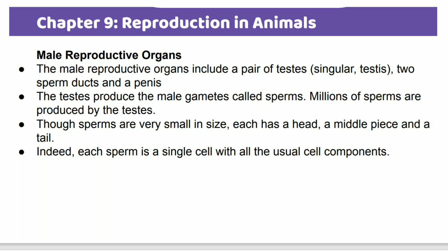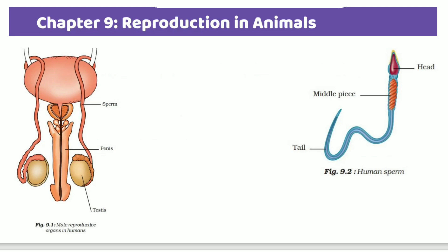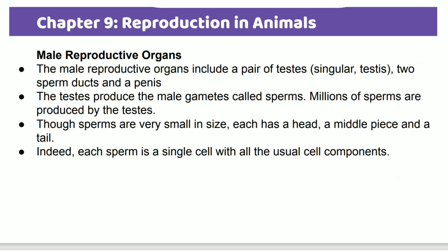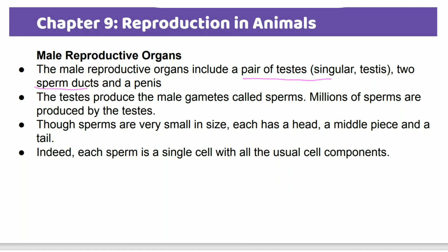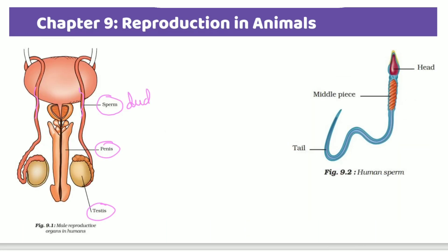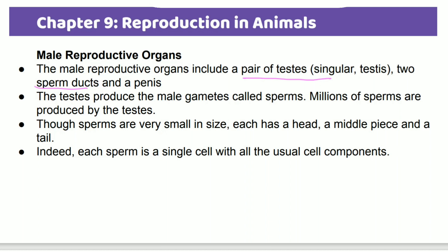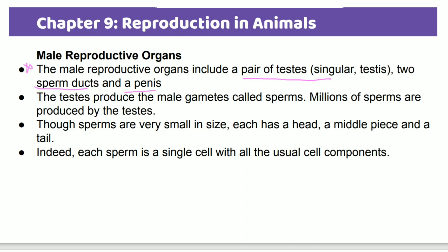The male reproductive organs include the testes — two pairs of testes — a sperm duct, and a penis. The testes produce the male gamete called sperm.